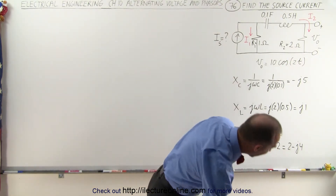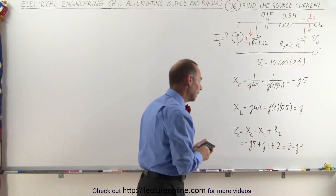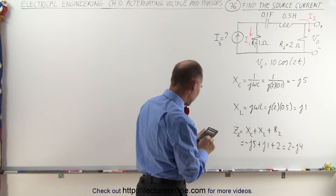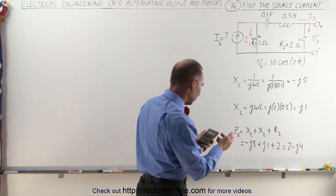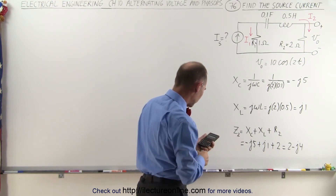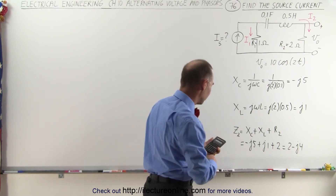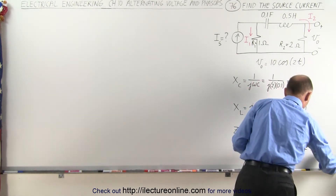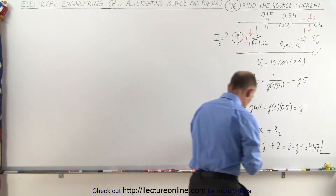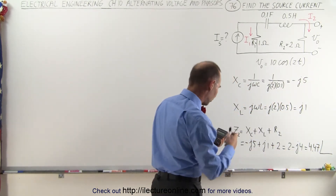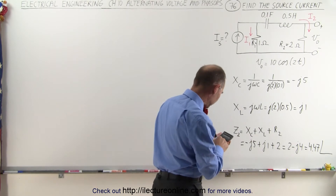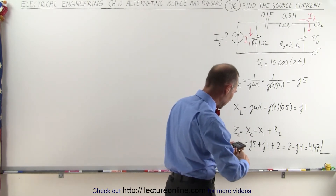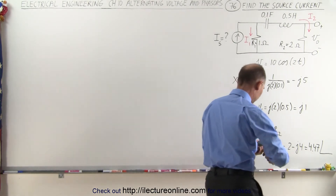If we want to use magnitude and phase angle format for Z2, that would be the square root of 4 squared plus 2 squared, which is the square root of 16 plus 4, that's the square root of 20, which is 4.47. And on the phase angle, it would be the inverse tangent of minus 4 divided by 2, which is the inverse tangent of 2, giving us minus 63.43 degrees.